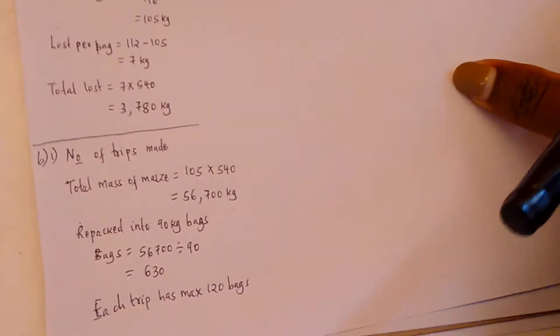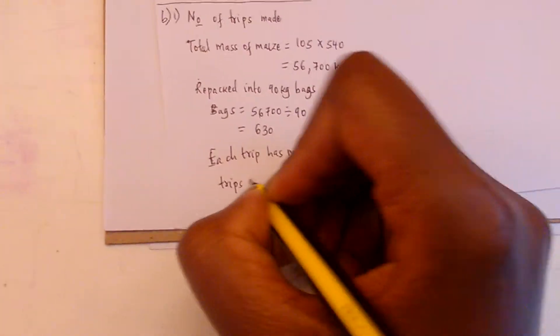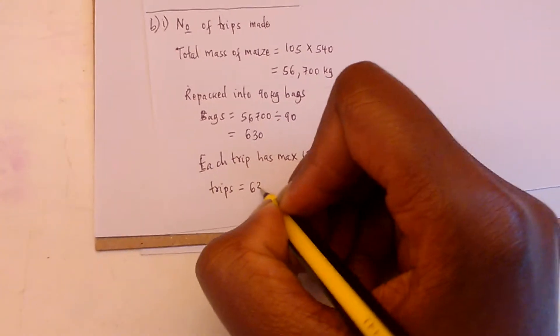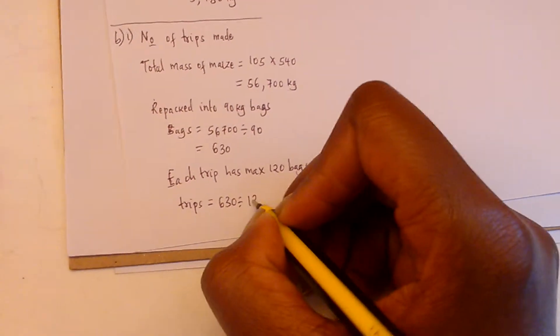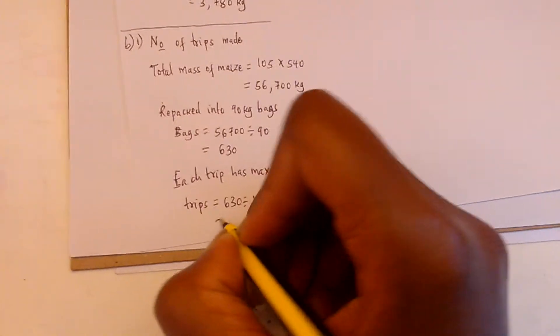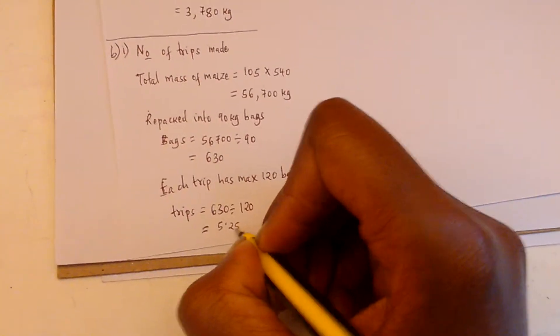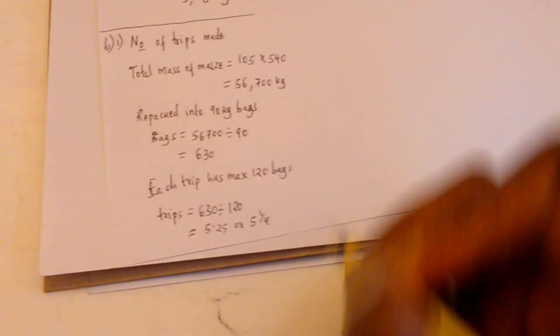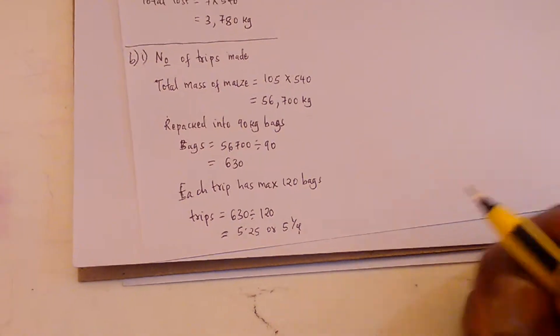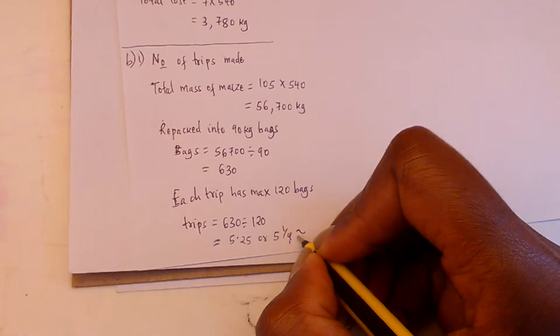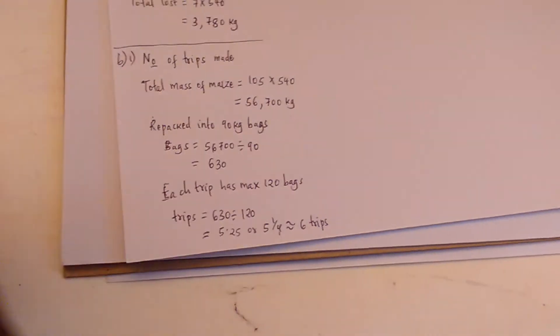The trips will be 630 ÷ 120, which is the maximum that can go per trip. This gives us 5.25 or 5¼. Since you cannot have a quarter trip, that gives us a total of 6 trips.